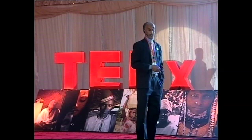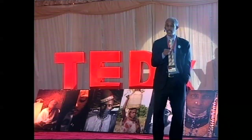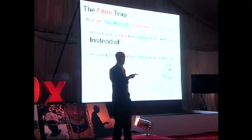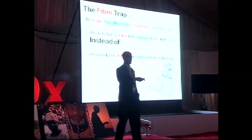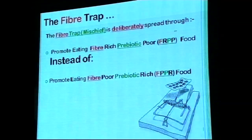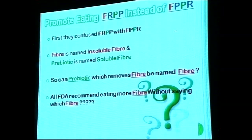Because of this misconception, there is promotion of fiber-rich, prebiotic-poor diets. Since prebiotic is the food for the bacteria that removes fiber, if people consume more fiber and less prebiotic, lifestyle diseases will result. This is the situation in the world today — people are promoting more fiber while reducing prebiotic, instead of doing the opposite.